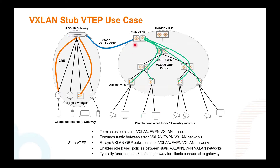The Stub VTAP will typically function as a Layer 3 default gateway for clients connected to the gateway. These clients will connect, terminate, and bridge via the static tunnel to the Stub VTAP. So the .1 default gateway will be on the Stub VTAP. For example, for subnet 1, the default gateway will be 1.1. If you want to route to clients on subnet 2 or subnet 3, they will route through the L3 VNI towards the access VTAPs.